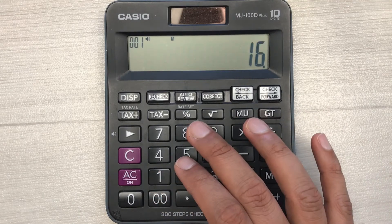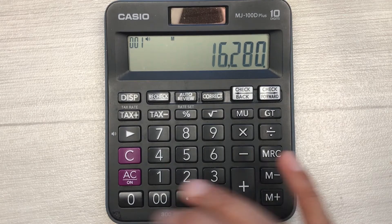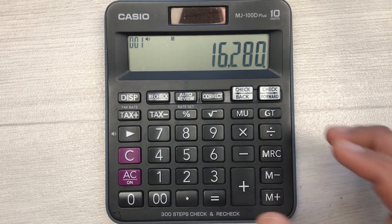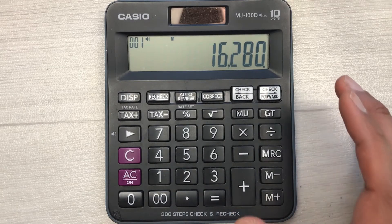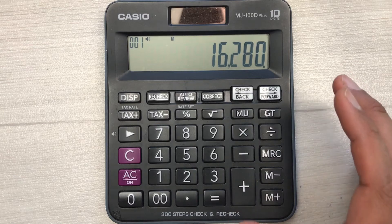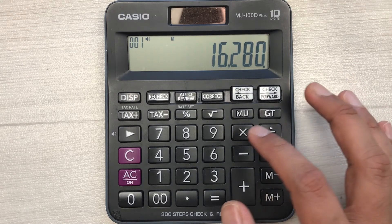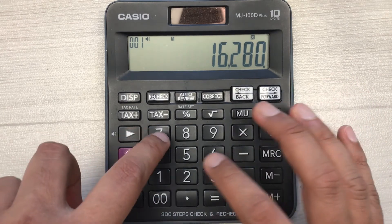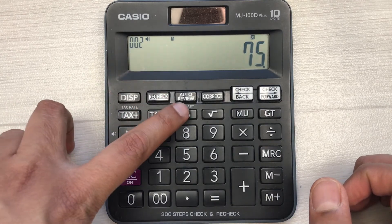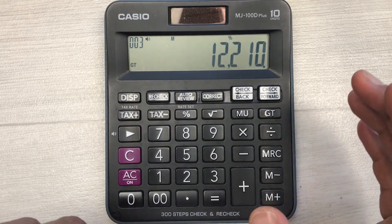Let's say you have an item and the price of that item is 16280, and you want to find out what will be the final price after 25% discount. So simply multiply it with 75 and then press the percentage button.